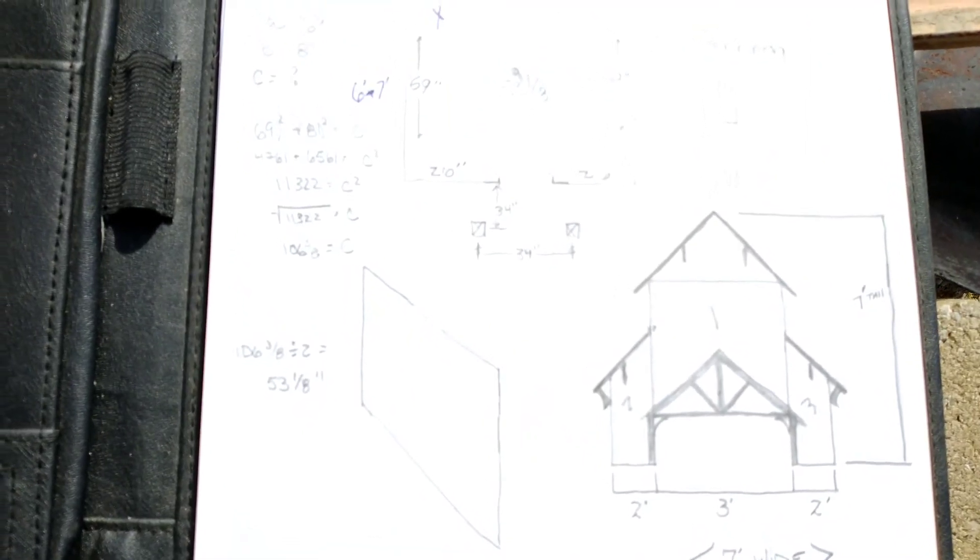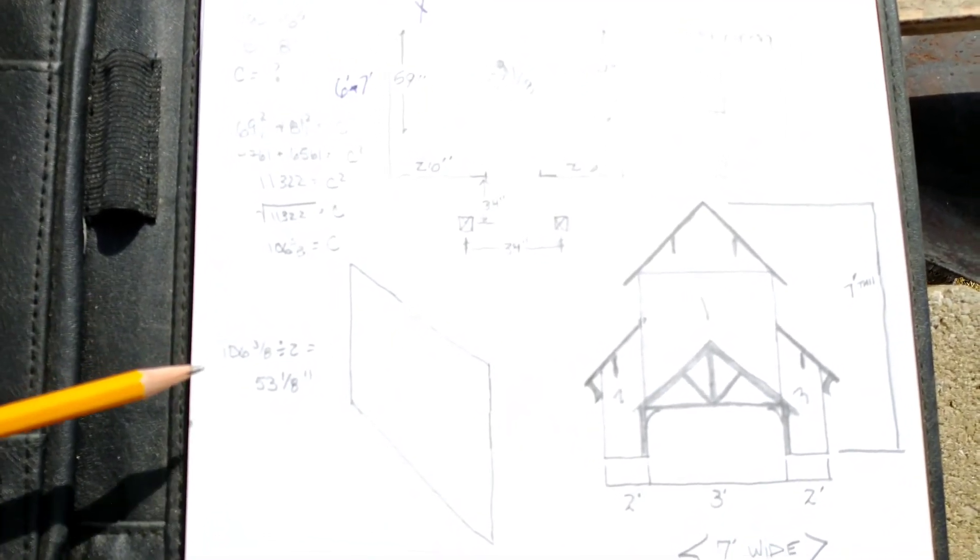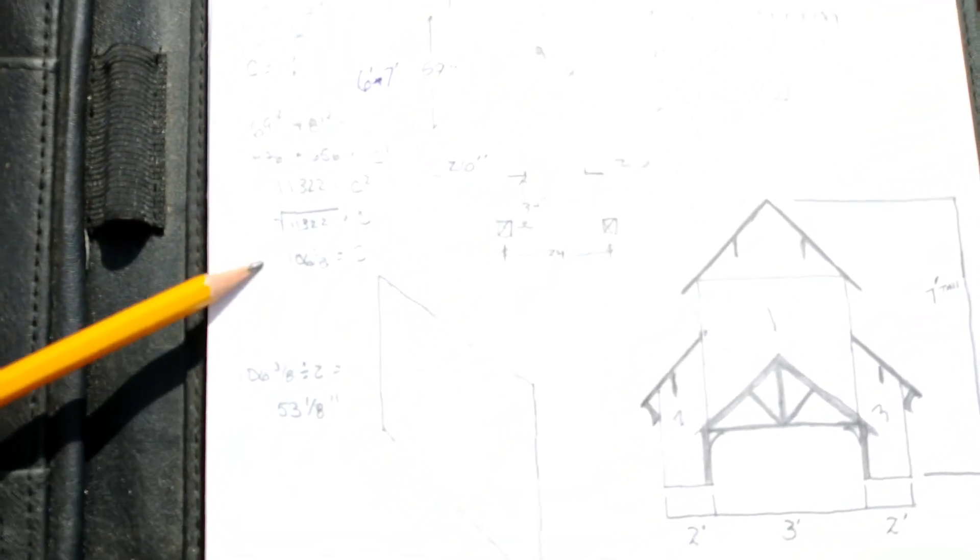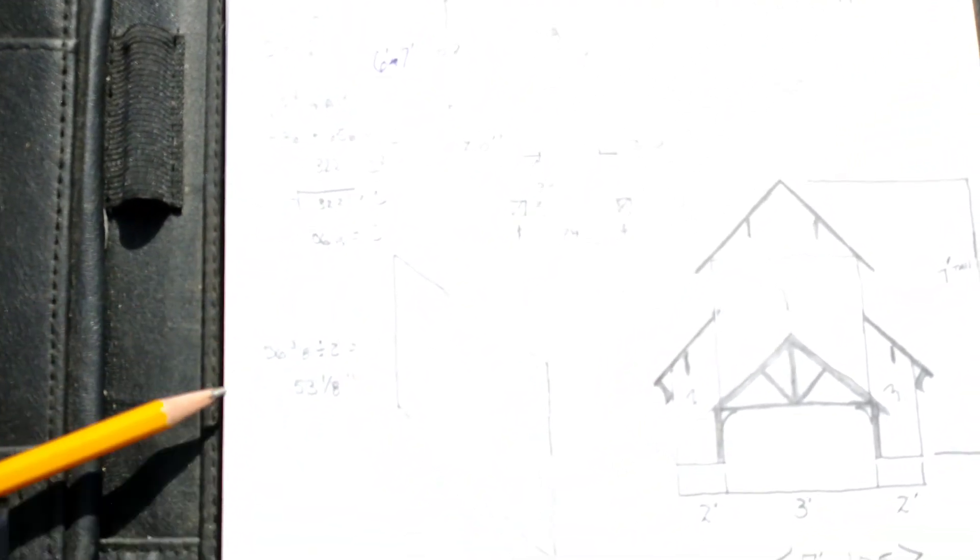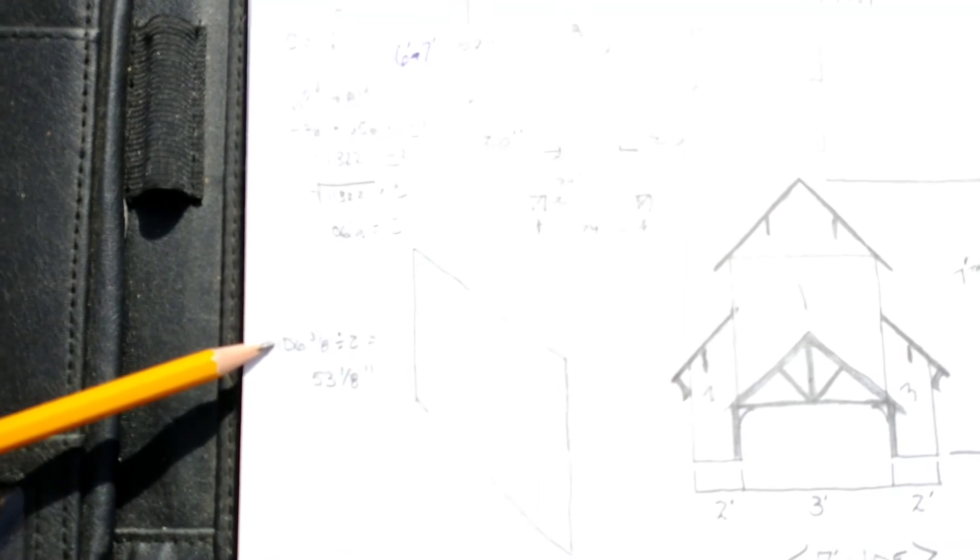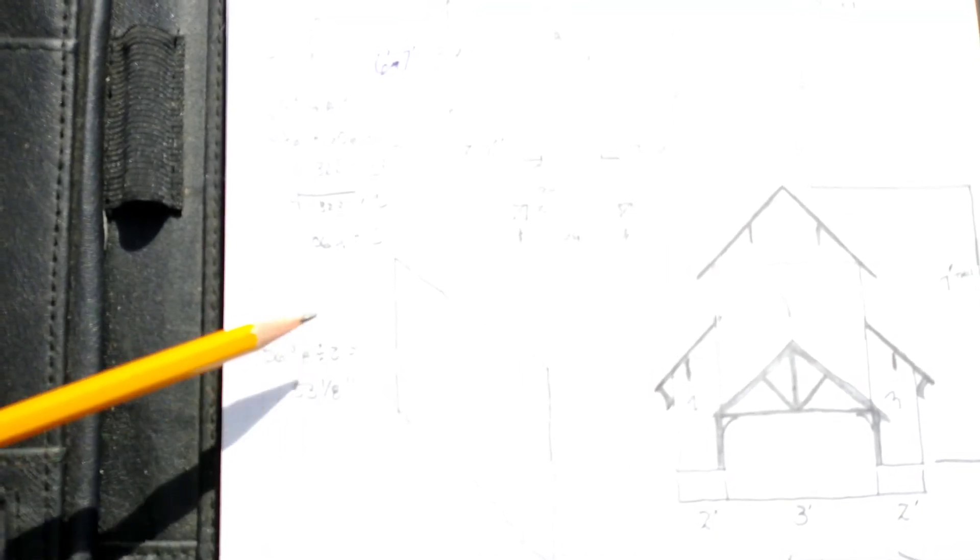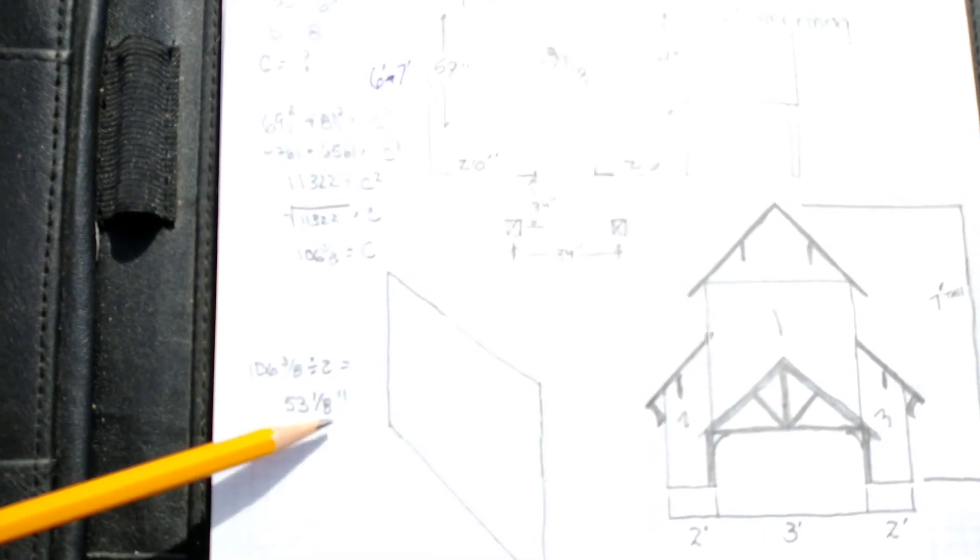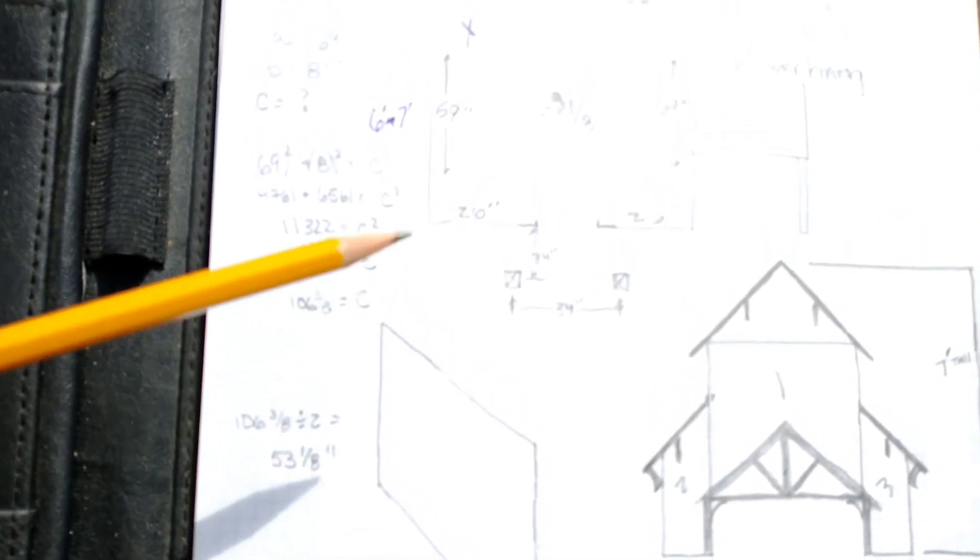Okay, so the final thing I needed to do to find the center of my entire building was to take that hypotenuse and divide it in half. So 106 and 3 eighths inches divided by two, the very center X marks the spot is 53 and 1 eighths inch.